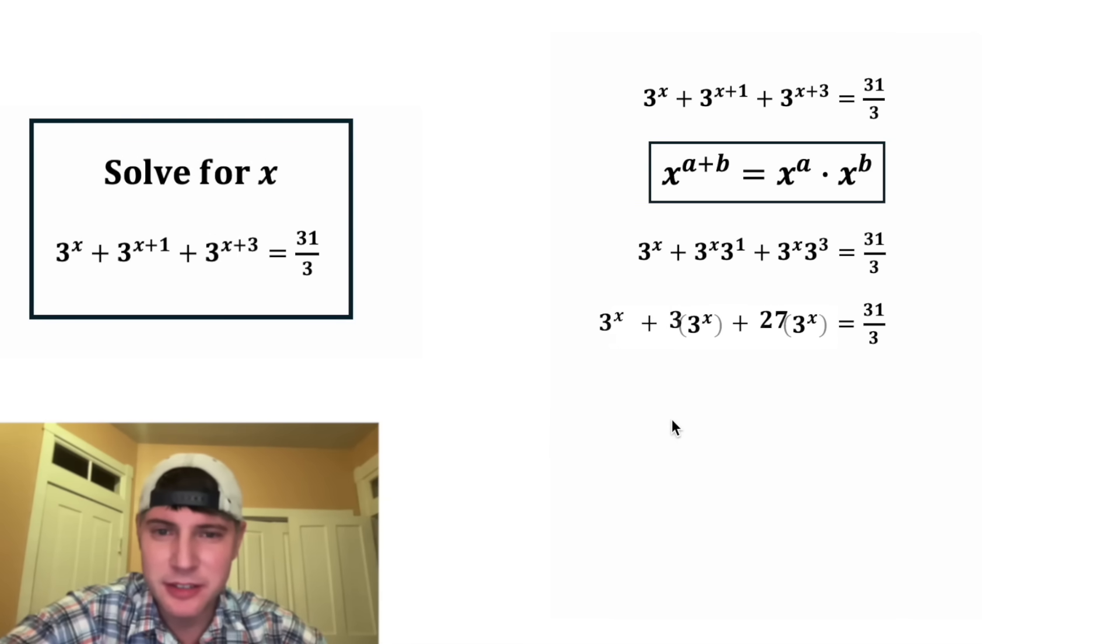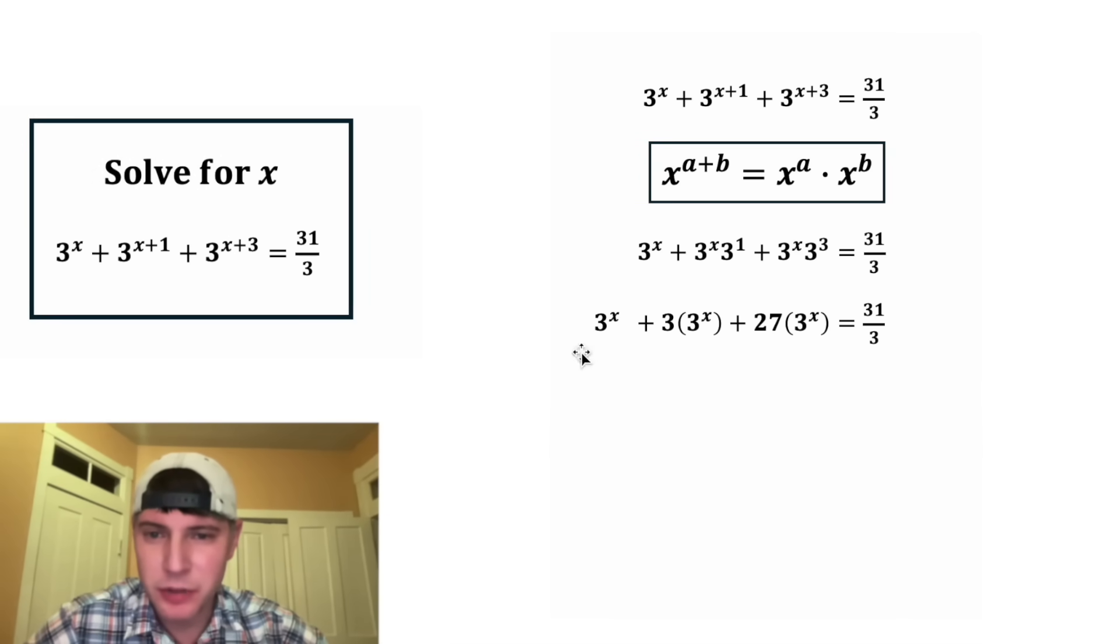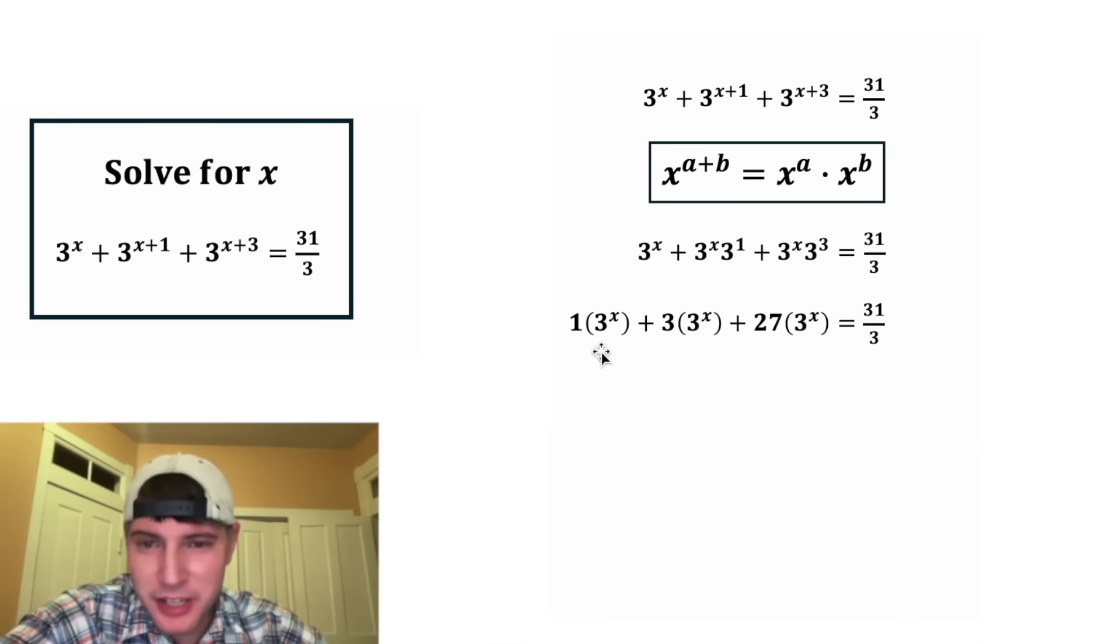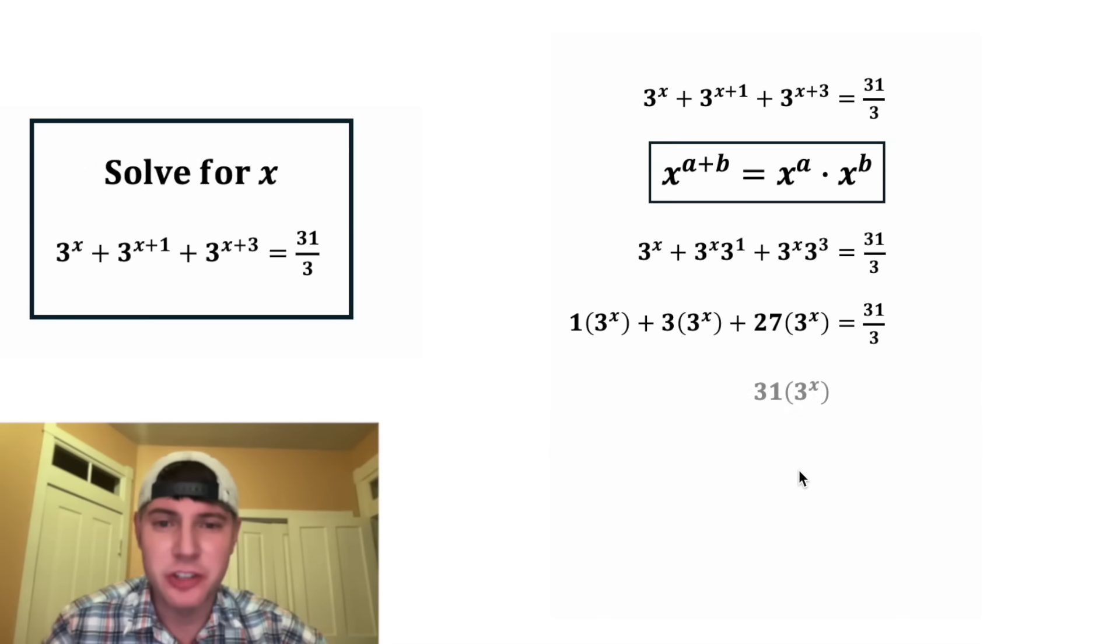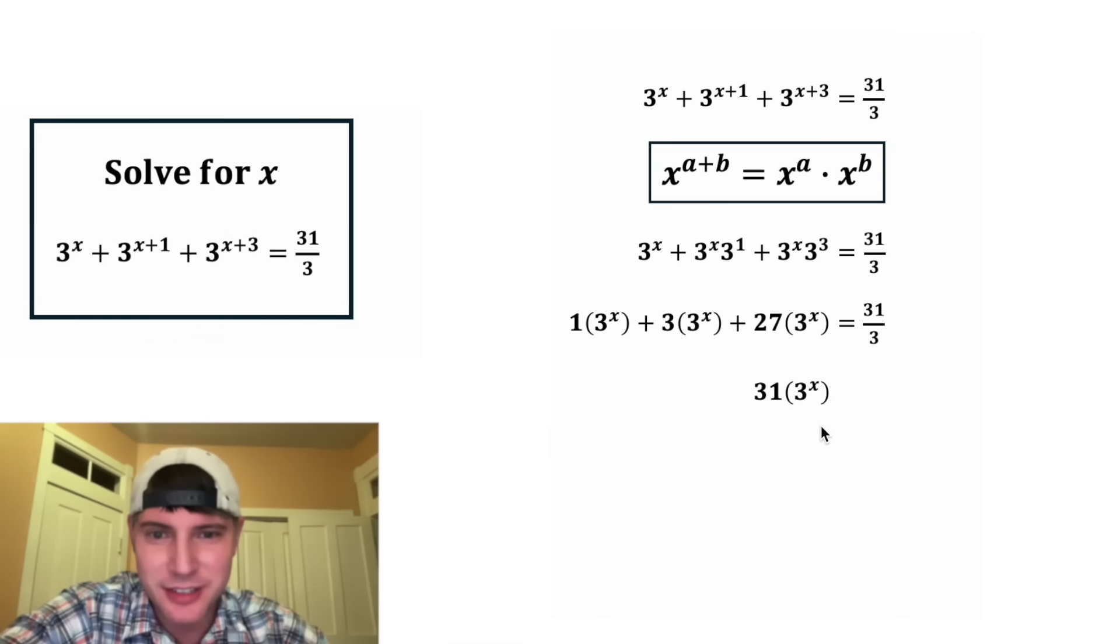Normally we could factor out three to the power of x, but I kind of want to rearrange it like this. So this is like 27 three to the x's, and this is three three to the x's, and this would end up being one three to the x. So ultimately we have one three to the x plus three three to the x plus 27 three to the x. These are going to add up to give us 31 three to the x's, and that's still going to be equal to 31 thirds.